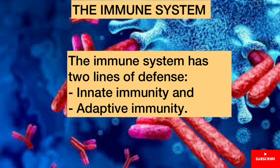The immune system has two lines of defense: innate immunity and adaptive immunity.